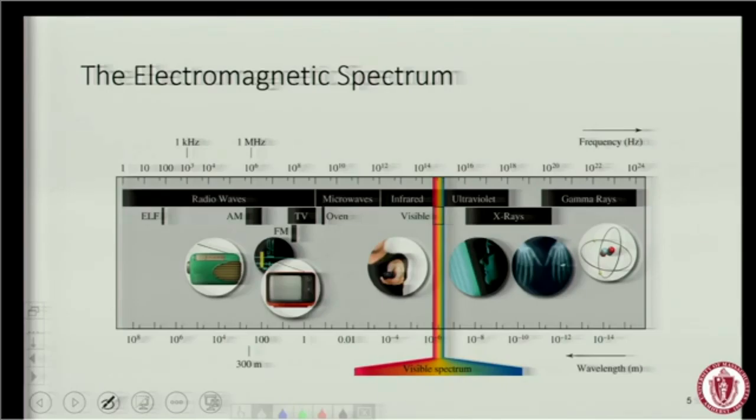So remember V is equal to lambda times, maybe I should write this on here. So V is lambda times frequency, or if you like, in the case of the speed of light, it's that C is lambda times frequency.